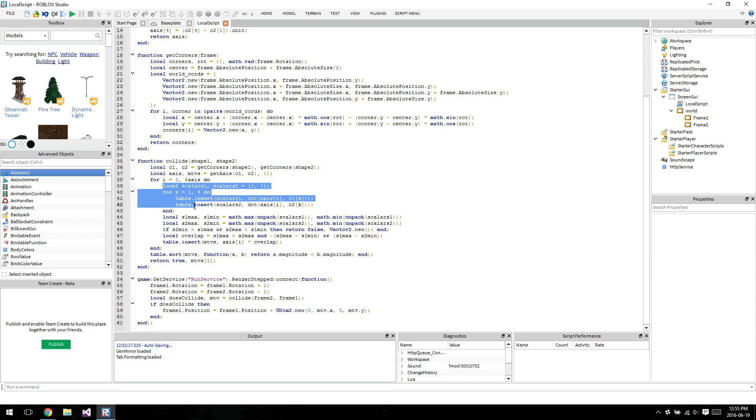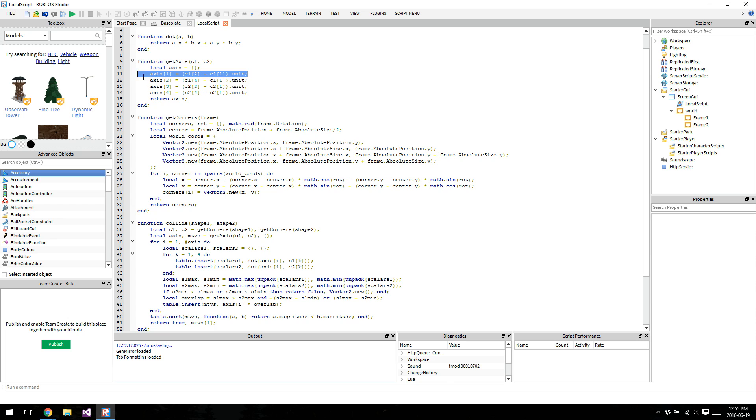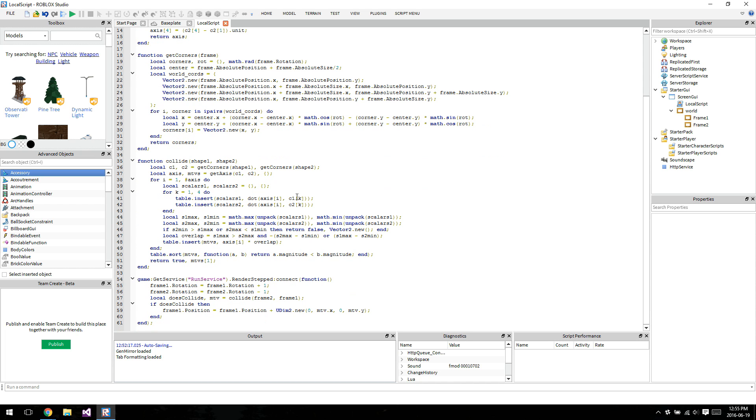So we project onto each axis here, there's a total of four corners per thing, and we project each axis. We don't have to divide by one, because the axis is unit vectors here, so there's no point, division by one to get a projection is redundant, so the dot product in this case is the projection. We're then getting the max and the mins, and then we're doing some checks.